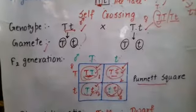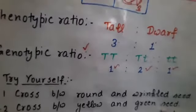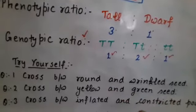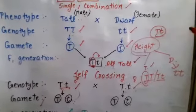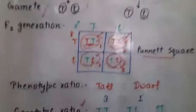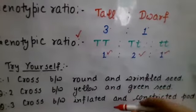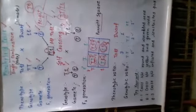Now what you have to do is solve some practice questions. Cross between round and wrinkled seeds, cross between yellow and green seeds, and cross between inflated and constricted pods — just as we chose the height character with tall or dwarf. You choose a character and solve the monohybrid cross in the same way. That's all about the monohybrid cross. Thank you so much.